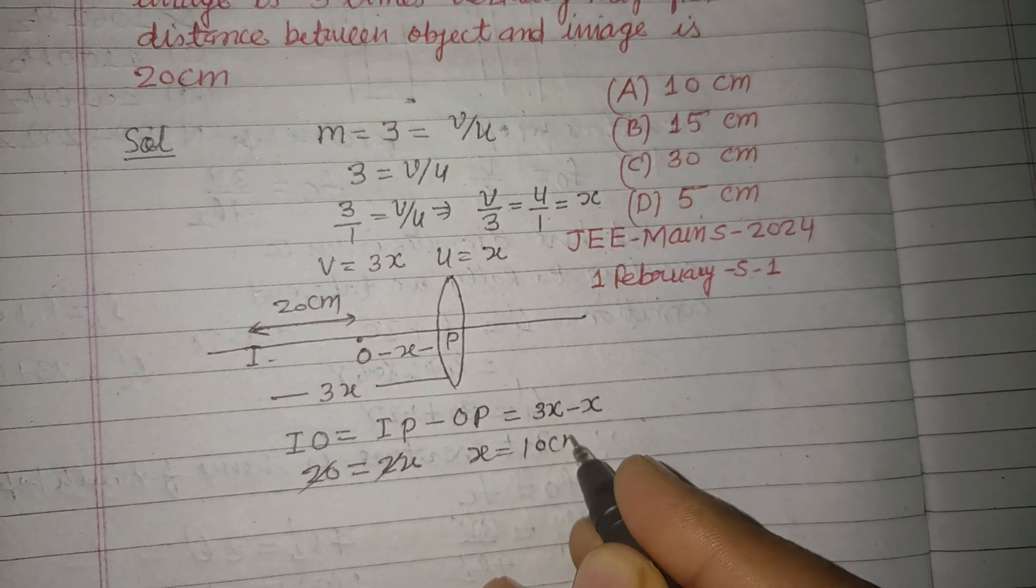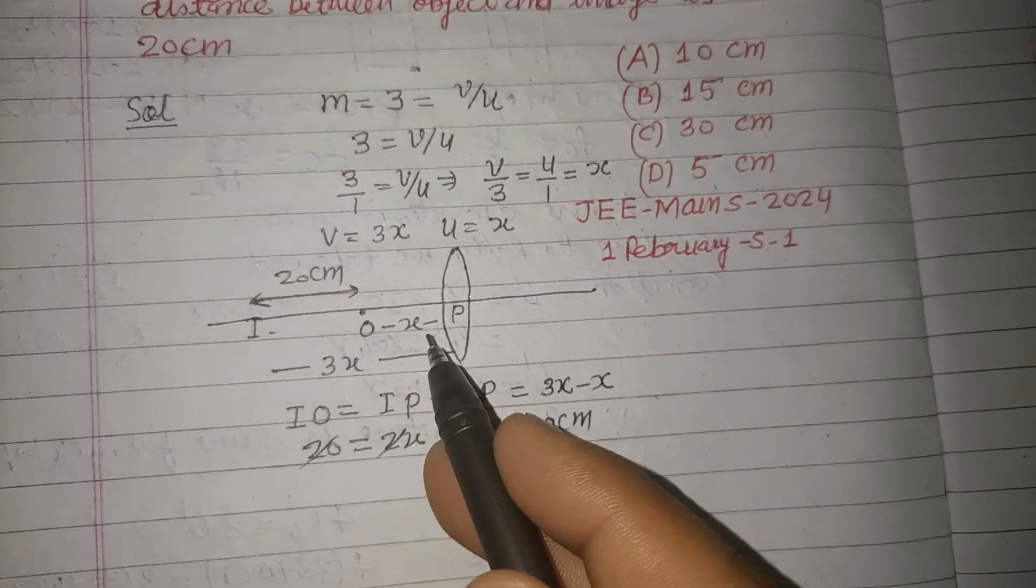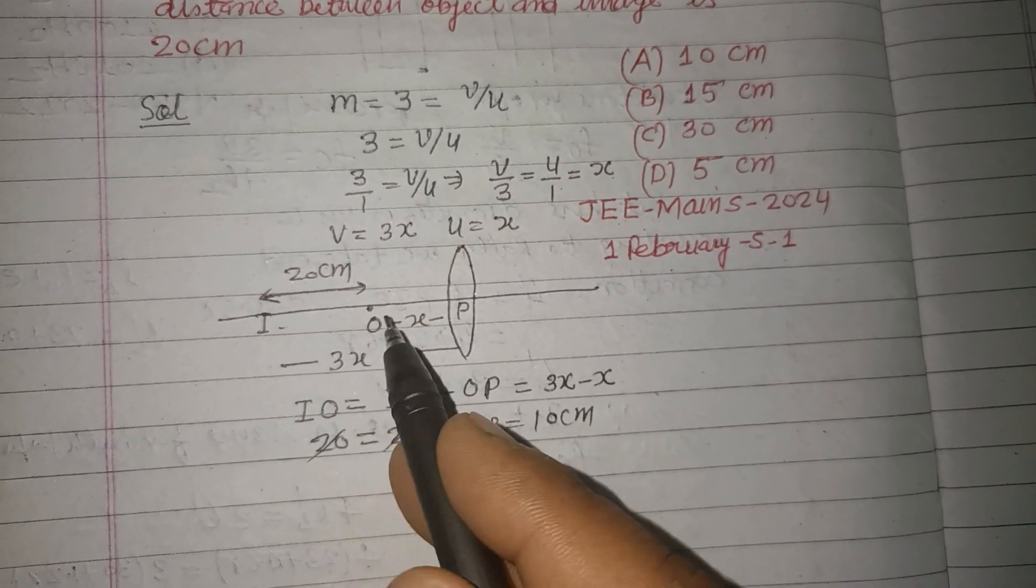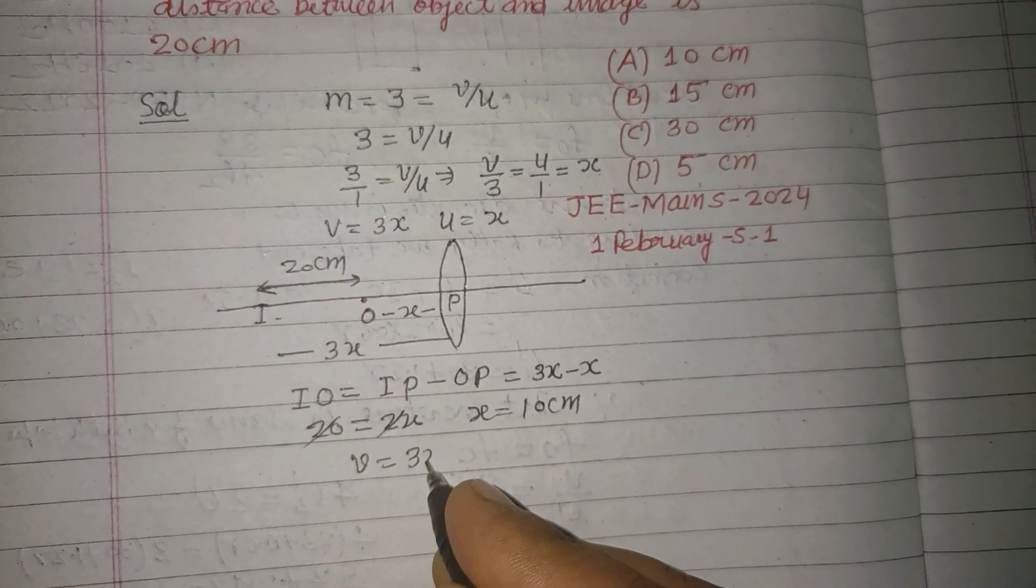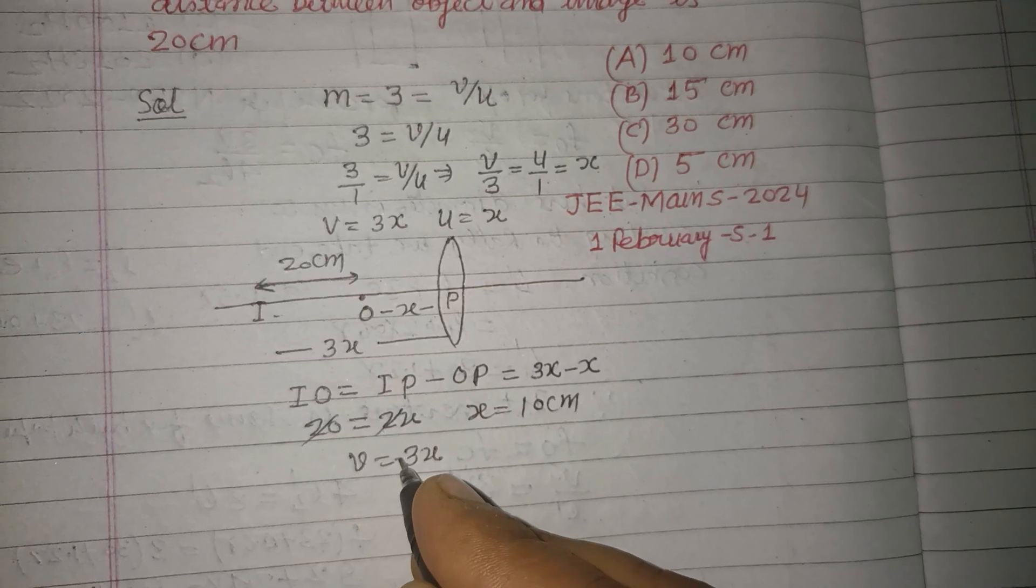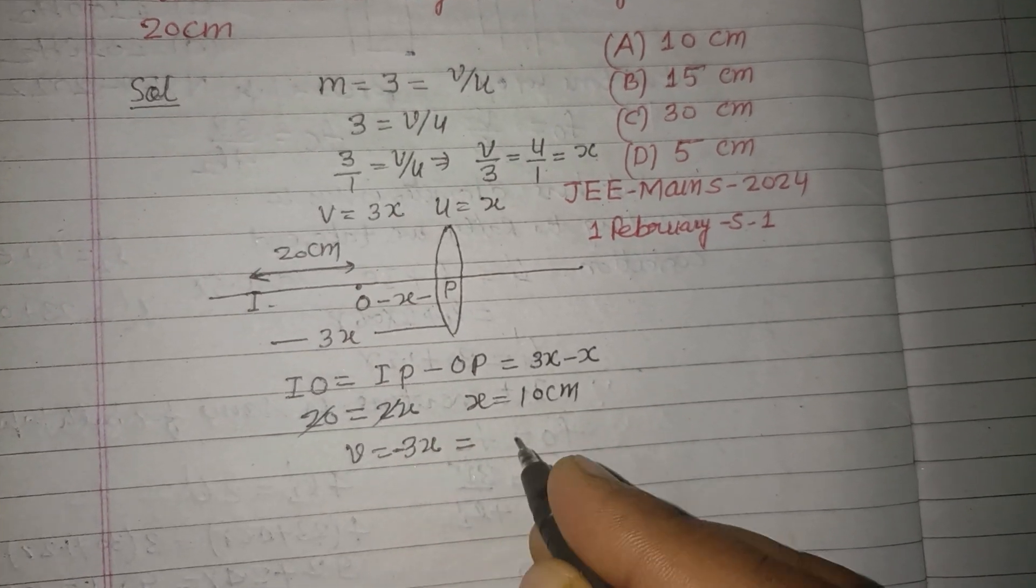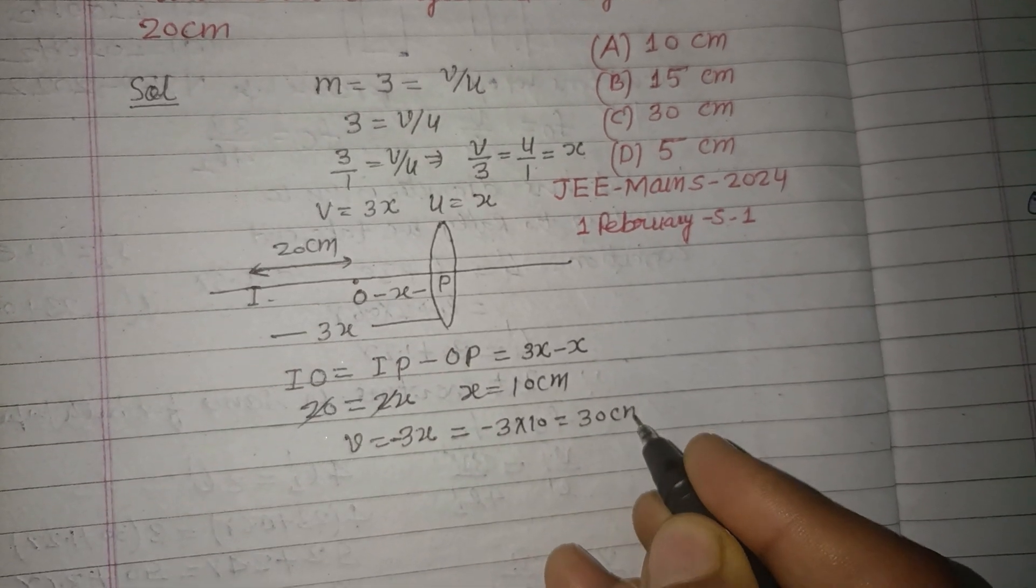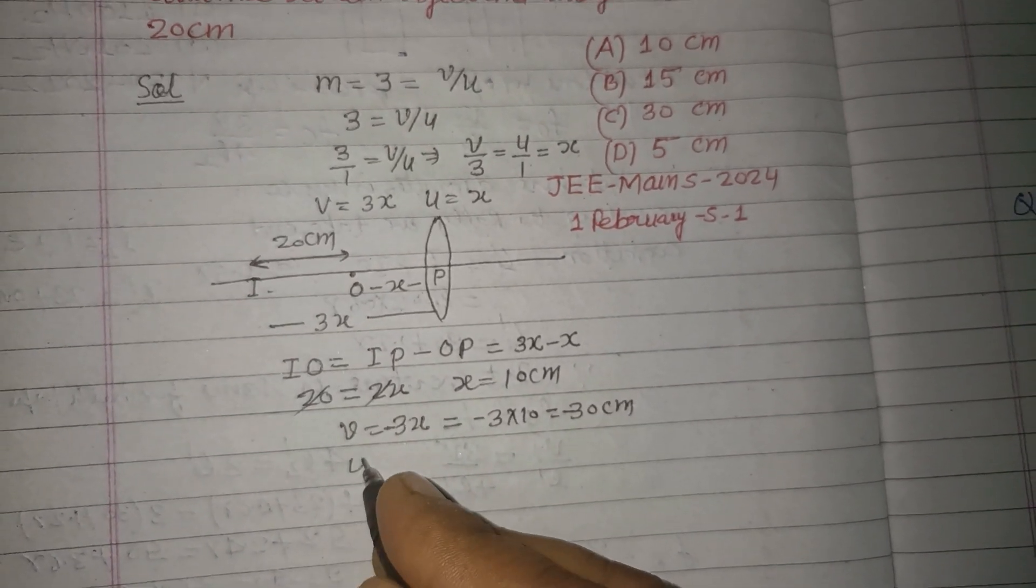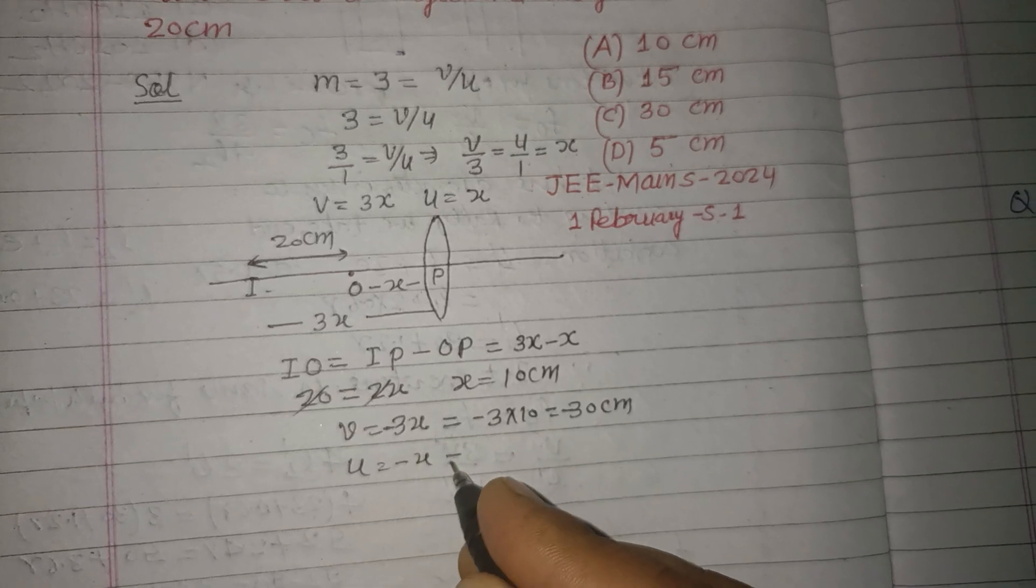So distances are in negative. v equals minus 3x, which is minus 3 into 10, equals minus 30 centimeters. And u equals minus x, so this is minus 10 centimeters.